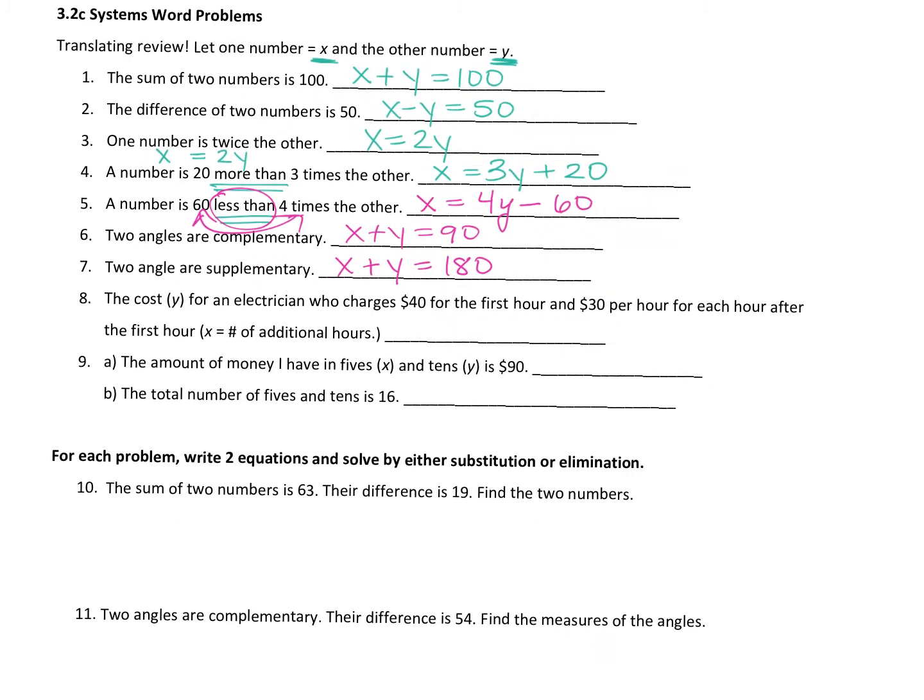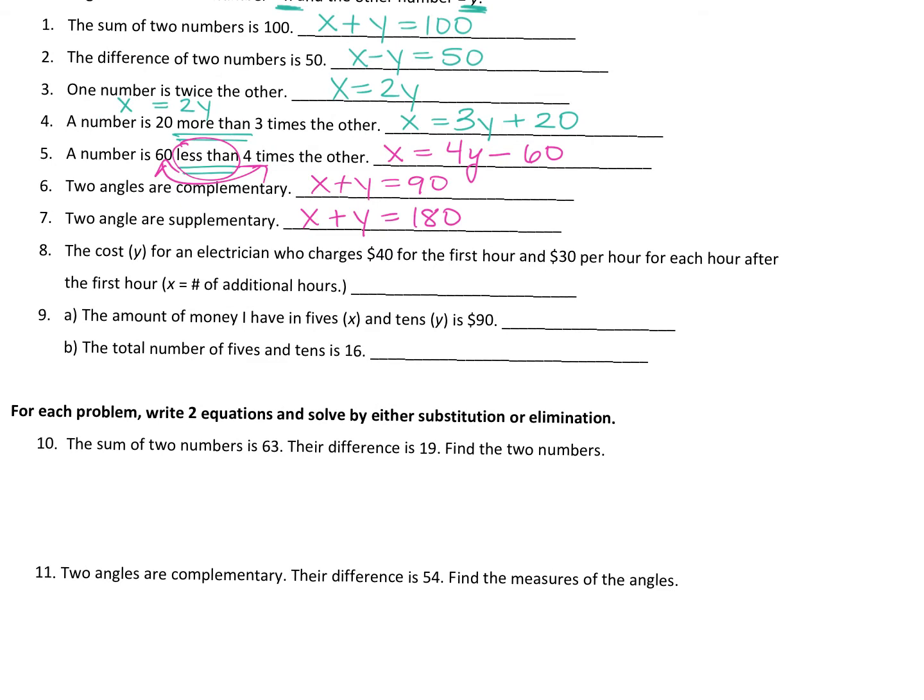Number eight, it says the cost y for an electrician who charges $40 for the first hour and $30 per hour after the first hour. How would you write that? We're going to try to find the cost. So y equals 40 plus 30x. Okay, you could write it 30x plus 40. It would be the same thing, right? Addition is commutative. So you may flip those and that's okay.